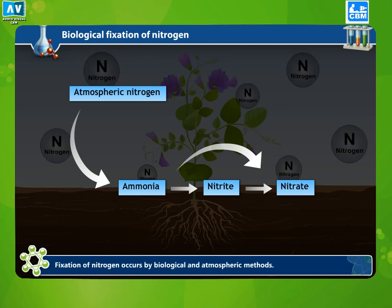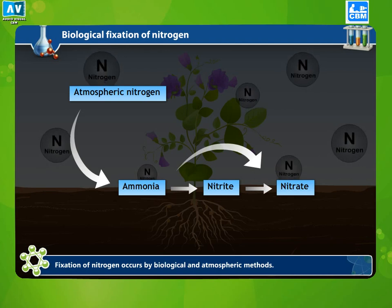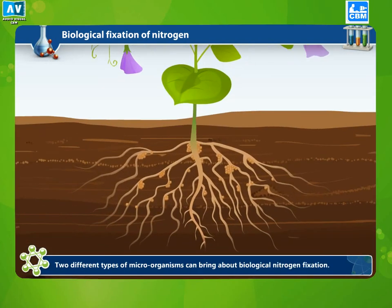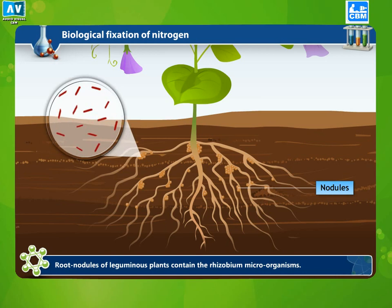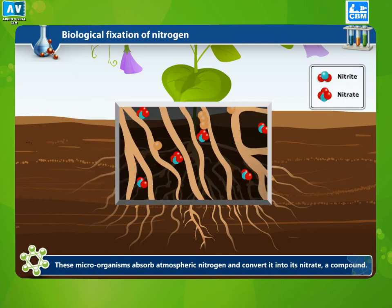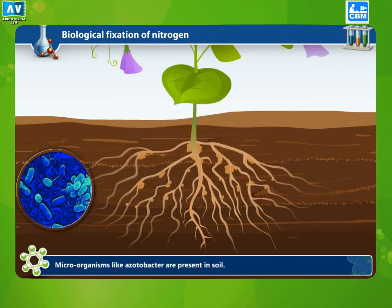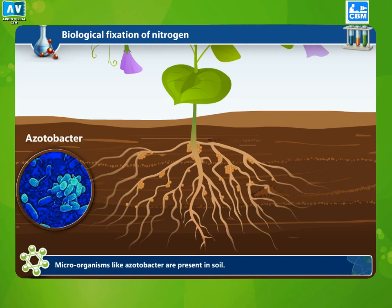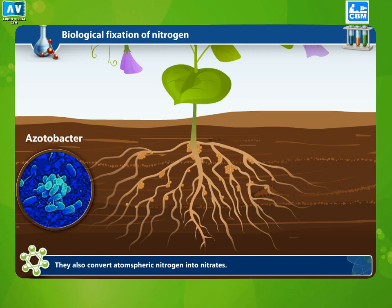Fixation of nitrogen occurs by biological and atmospheric methods. Two different types of microorganisms can bring about biological nitrogen fixation. Root nodules of leguminous plants contain the rhizobium microorganisms. These microorganisms absorb atmospheric nitrogen and convert it into nitrates, a compound. Microorganisms like acetobacter are present in soil and also convert atmospheric nitrogen into nitrates.